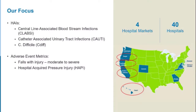The focus for this initiative was on our nurse-sensitive quality measures for three of our HAIs: CLABSI, CAUTI, and C. diff, as well as two adverse metrics — falls with injuries and HAPIs. This was focused in our hospital work: 40 hospitals in our four hospital markets in Oregon, California, and Hawaii.